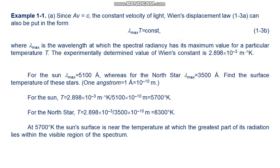Example 1.1: Since λν = c, the constant velocity of light, Wien's displacement law can also be put in the form λ_max · T = constant, where λ_max is the wavelength at which spectral radiancy has its maximum value for the particular temperature T. The experimentally determined value of Wien's constant is 2.898 × 10^-3 meter · Kelvin.